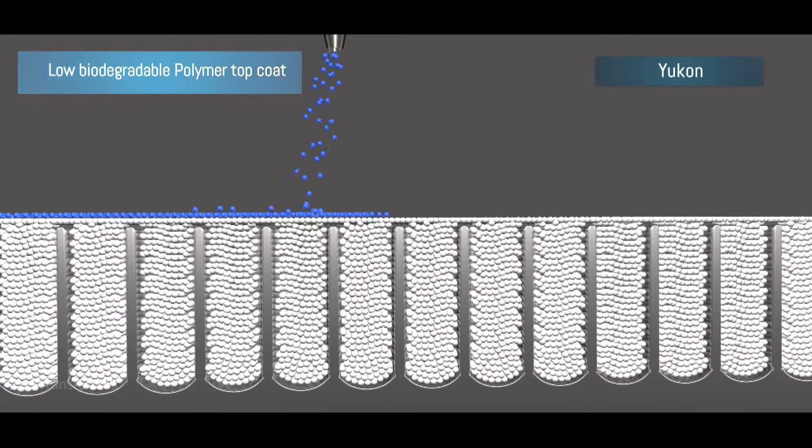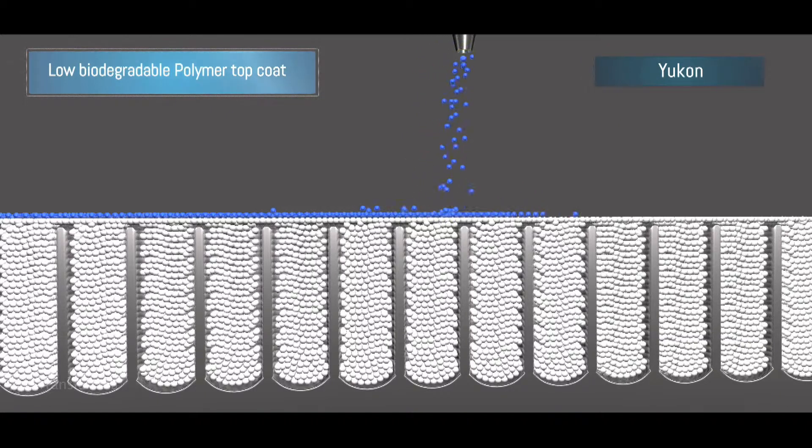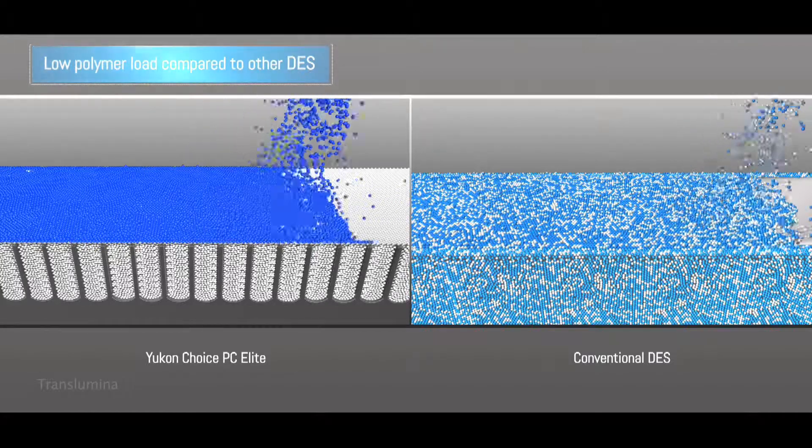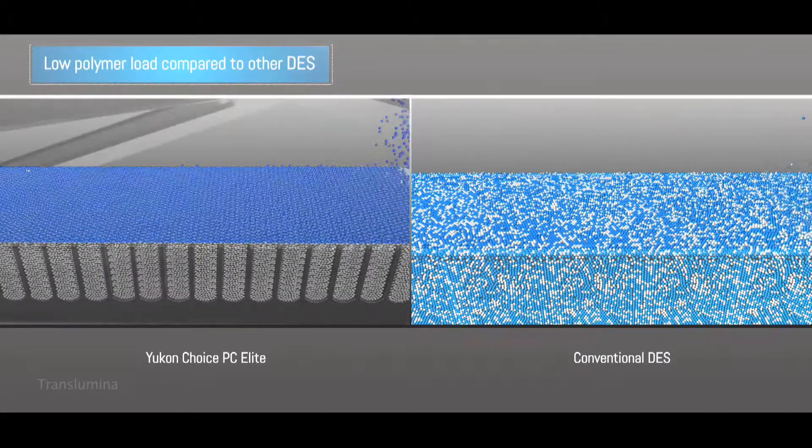A top coat of small layer of biodegradable polymer is applied over the drug loaded micropores. This helps in using only one-fourth of the polymer as compared to the conventional DES.